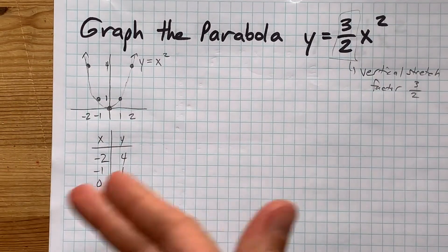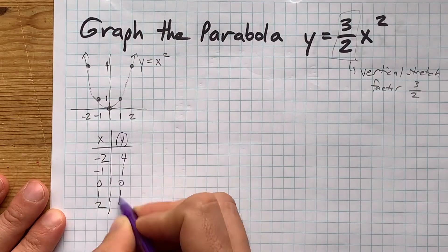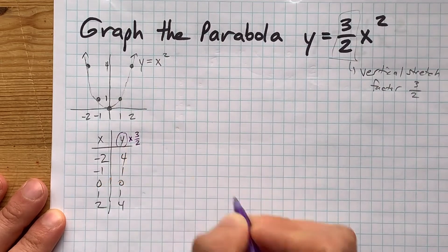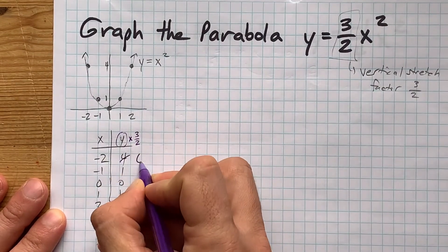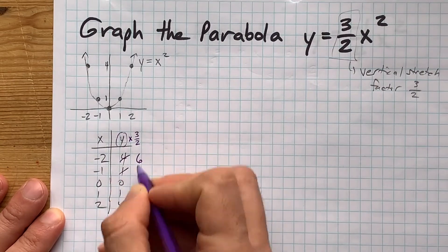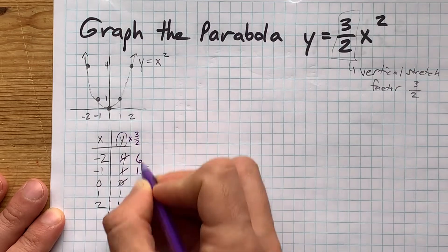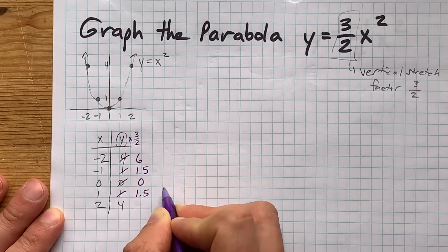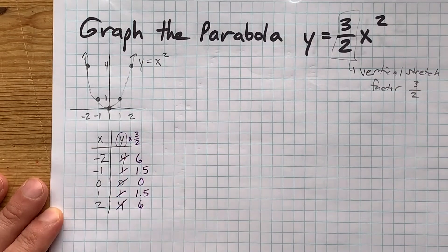One way to deal with that is to take your y values, and you can do this from the curve or the table of values, and times them all by 3 halves. So, 4 times 3 halves gives me 6. 1 times 3 halves gives me 3 halves. 0 times 3 halves is 0. 1 times 3 halves is 3 halves again. And 4 times 3 halves is 6.